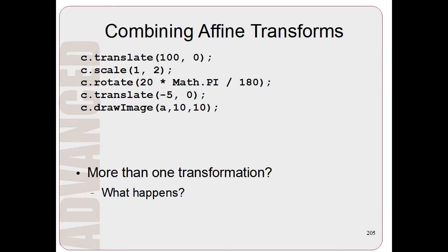Now one weird thing happens when you try to do more than one transformation. This is where these affine transformations can get sort of complicated. So here let's say we want to translate, scale, rotate and translate an image. How exactly does that work?